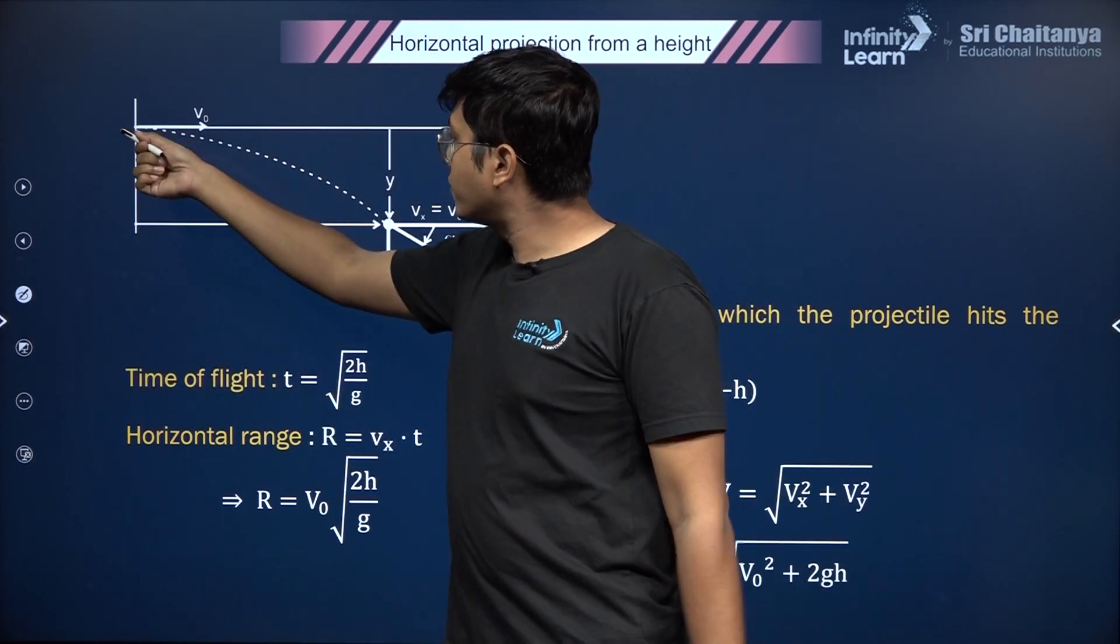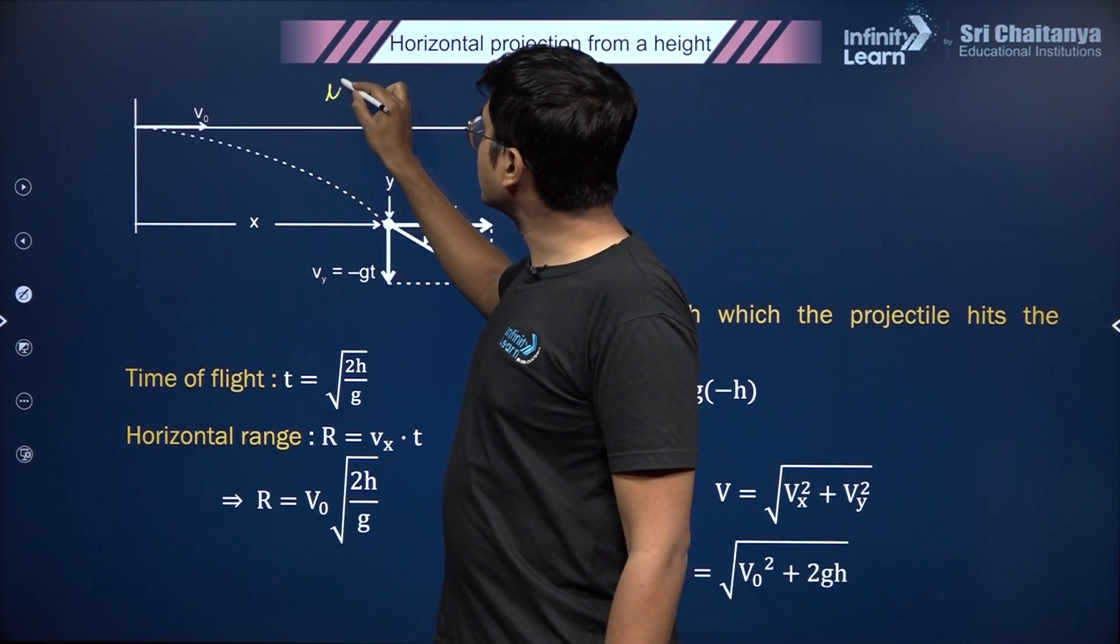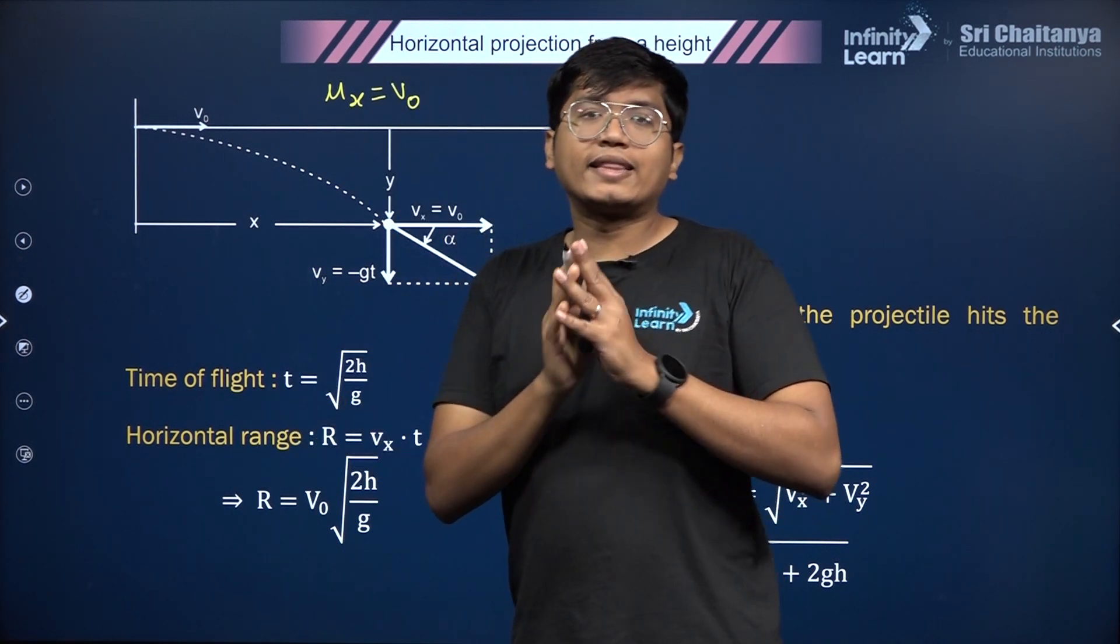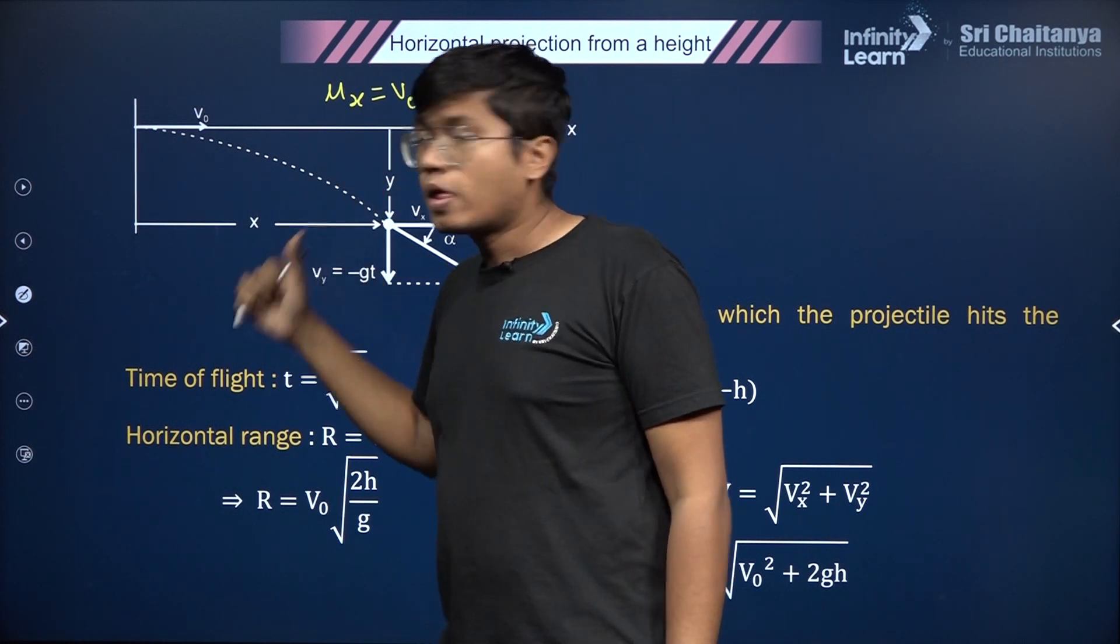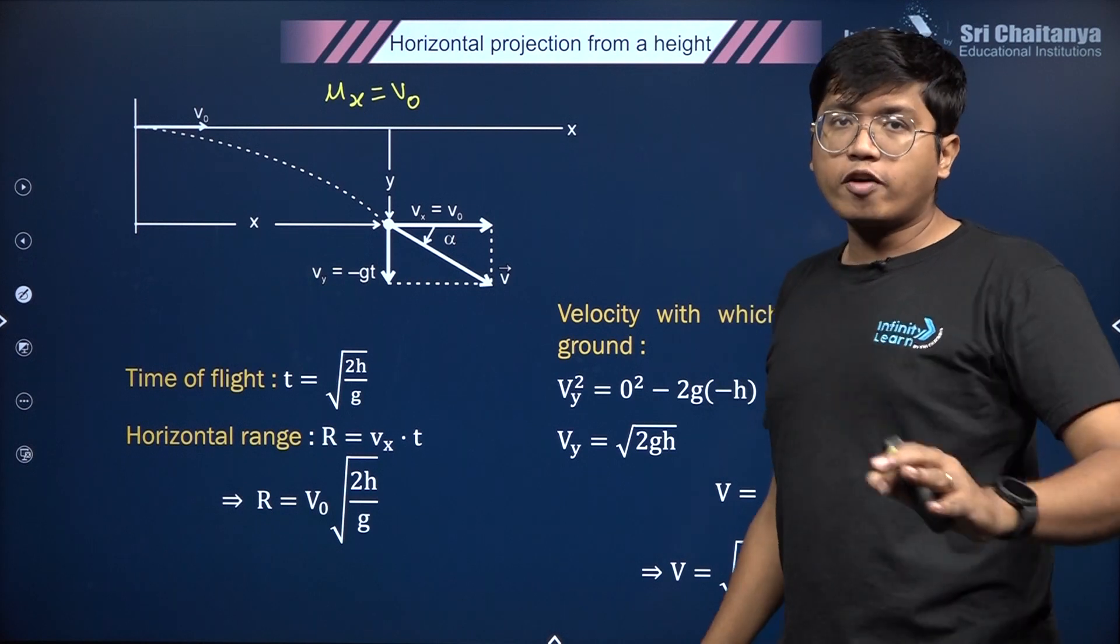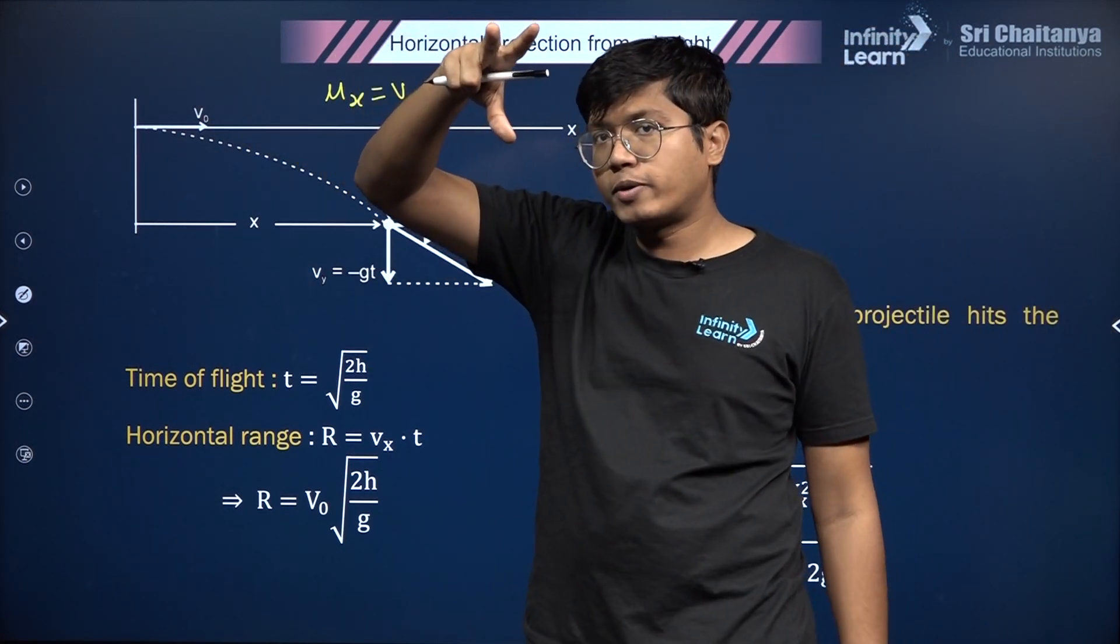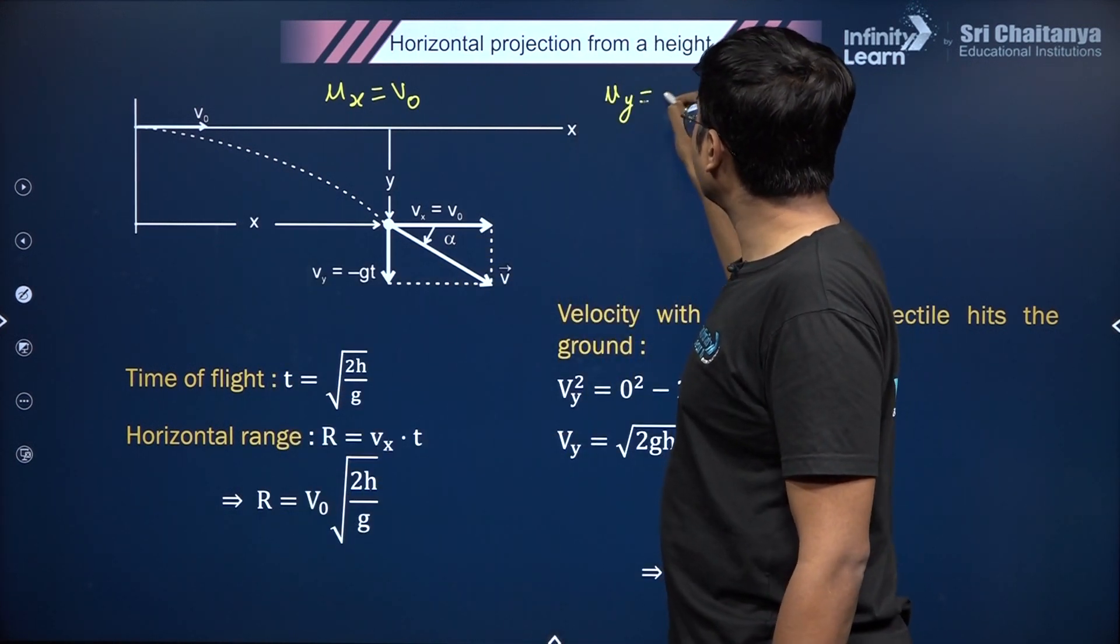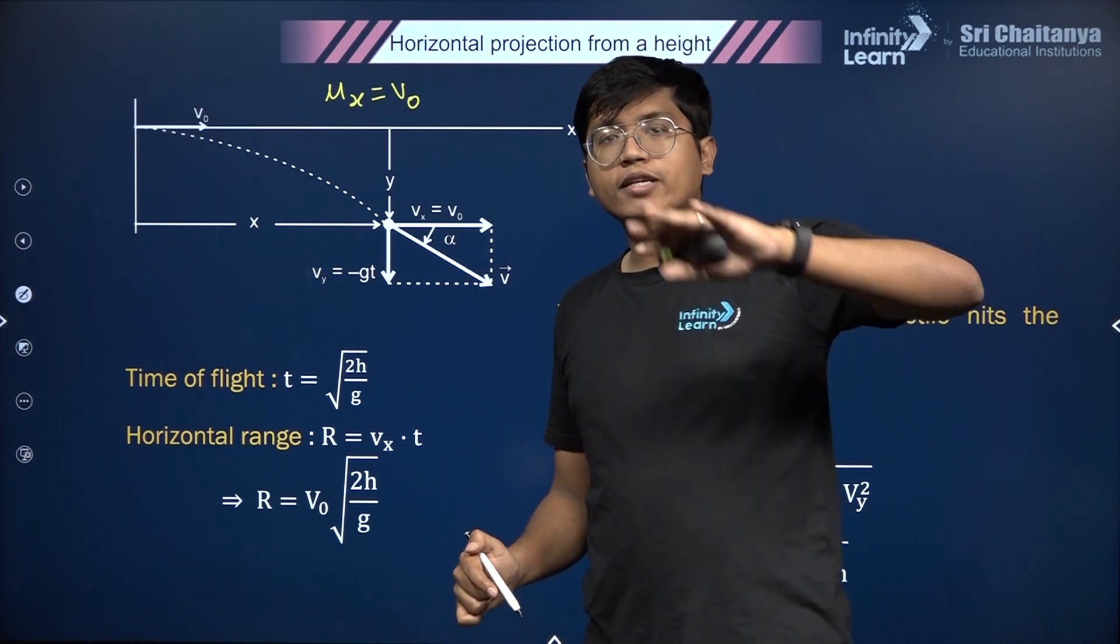When you launch it horizontally, the horizontal speed uₓ = v₀, the speed with which you launch it, and that does not change because there is no acceleration in that direction. In the vertical direction, if you look at it, it's just like free fall. You let it go from rest, which means uᵧ at the starting point is equal to zero, and from then on you let it accelerate. You deal with it from then on in the same way as you would do with free fall.